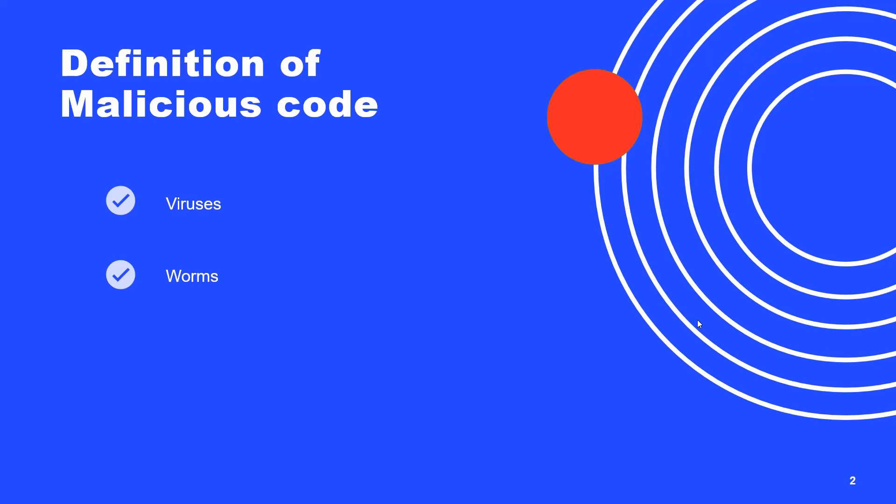Primarily, malicious codes are broadly classified into two types: viruses and worms. A virus is a type of malicious software, or malware, that spreads between computers and causes damage to data and software.